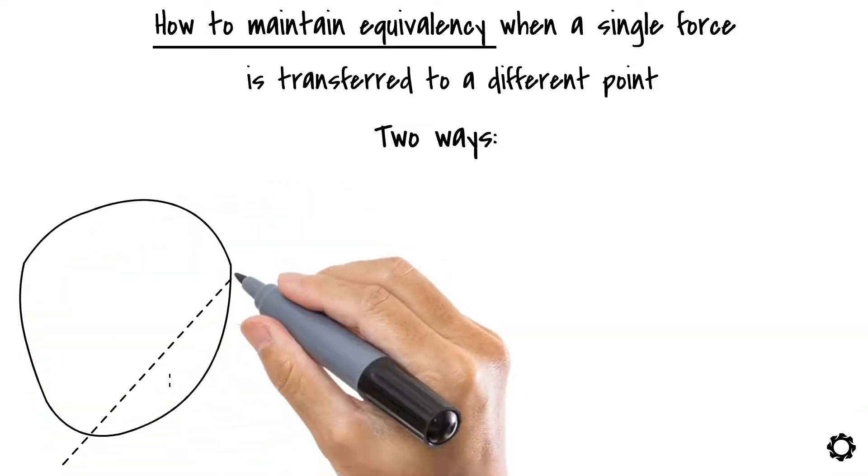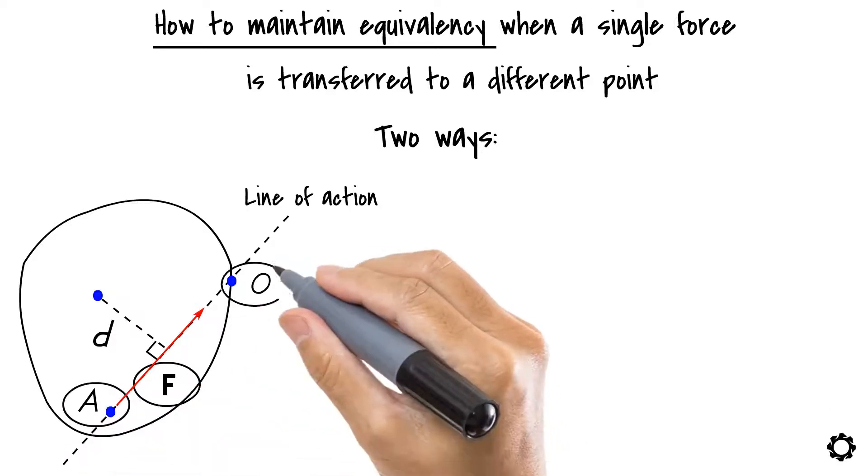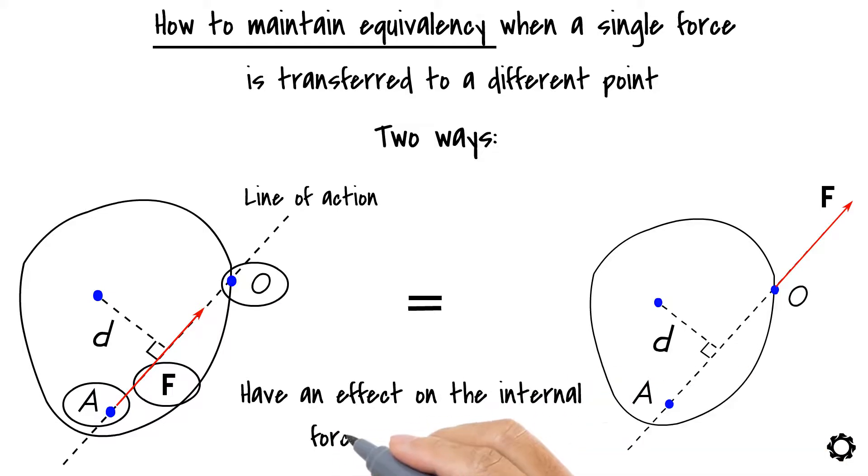The first way is to move the force along its line of action. If we move the force from point A to point O which are both along the line of action of the force, then this would not alter the external effect of the force on the body. Note, however, that this will have an effect on the internal forces of the body.